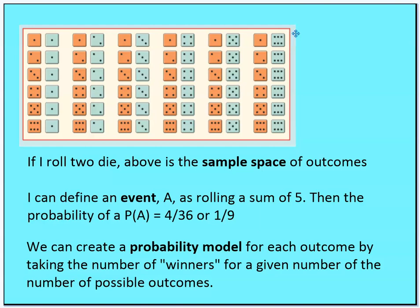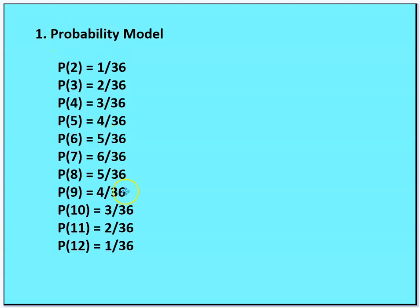We can use these probabilities to write a probability model for each outcome by taking the number of winners for a given outcome over the number of possible outcomes. Here's the probability model for each of the different outcomes — probability of two through twelve. The sum of these probabilities should add up to 36 because there are 36 outcomes in the sample space.